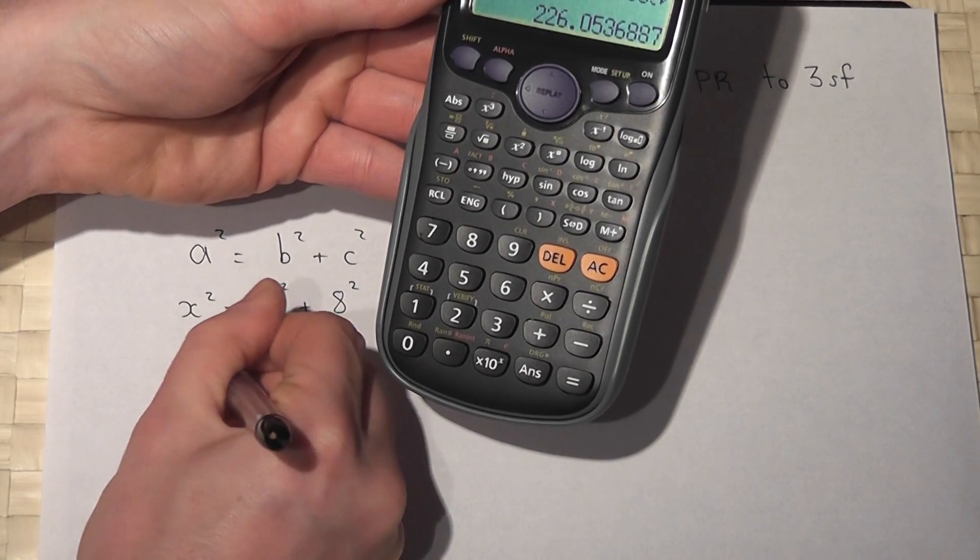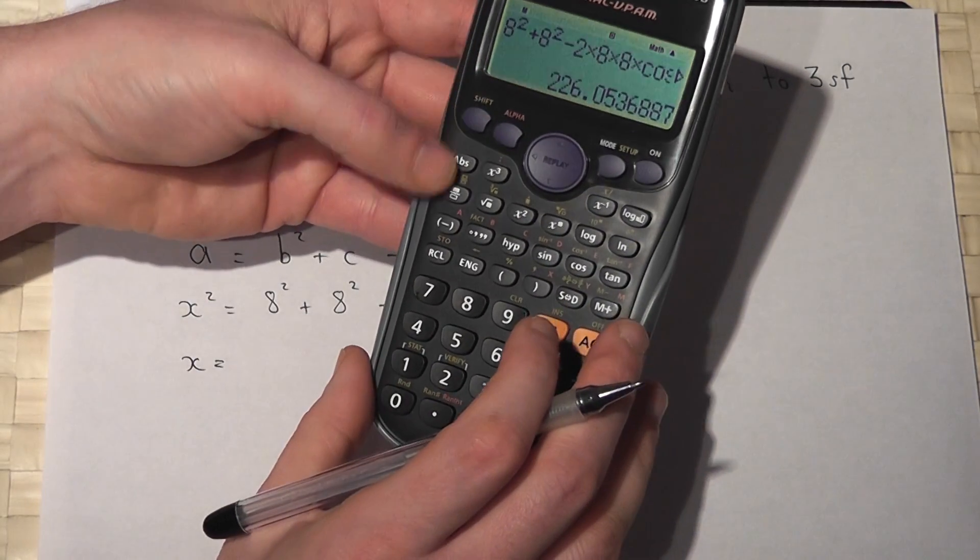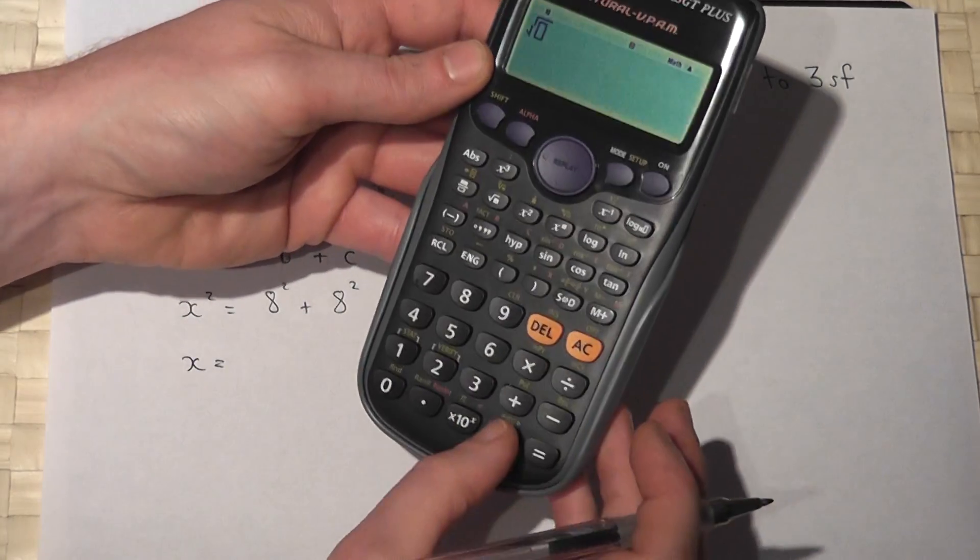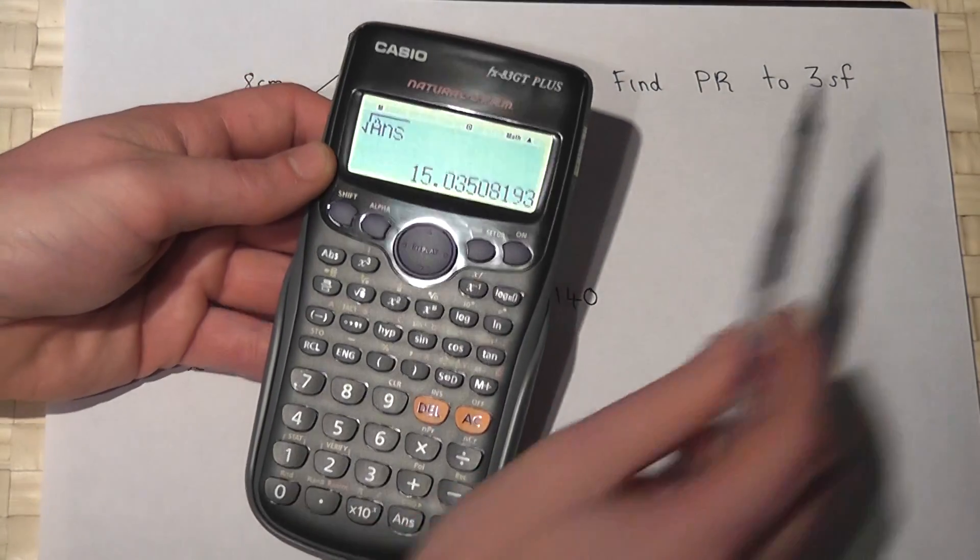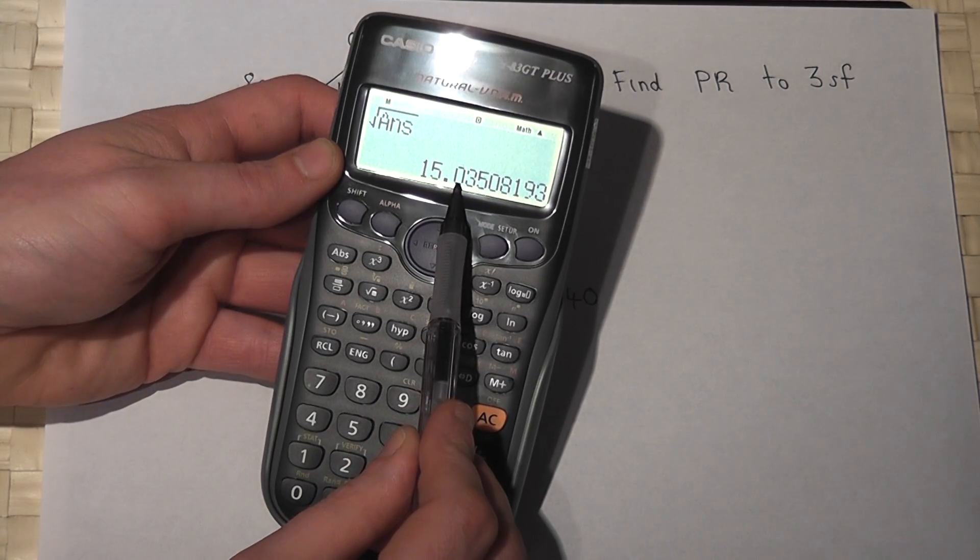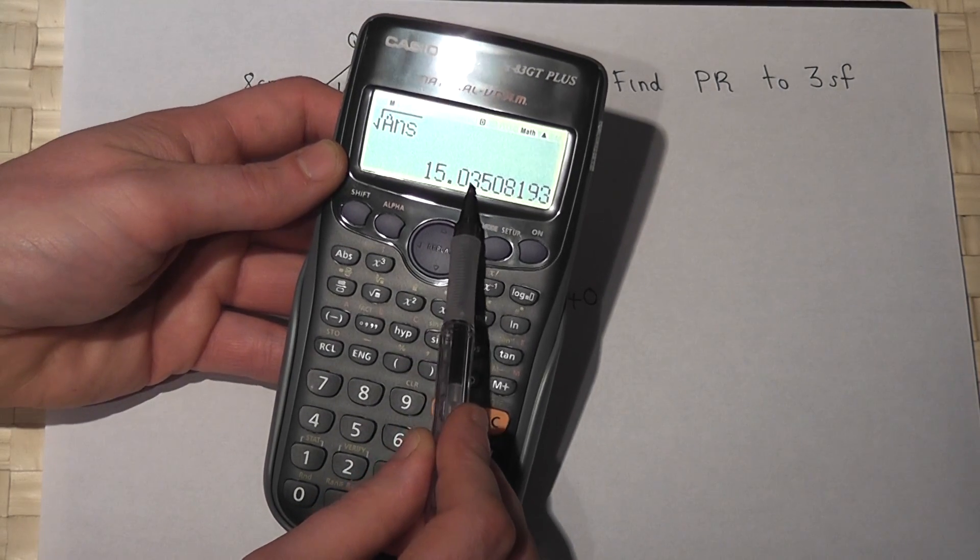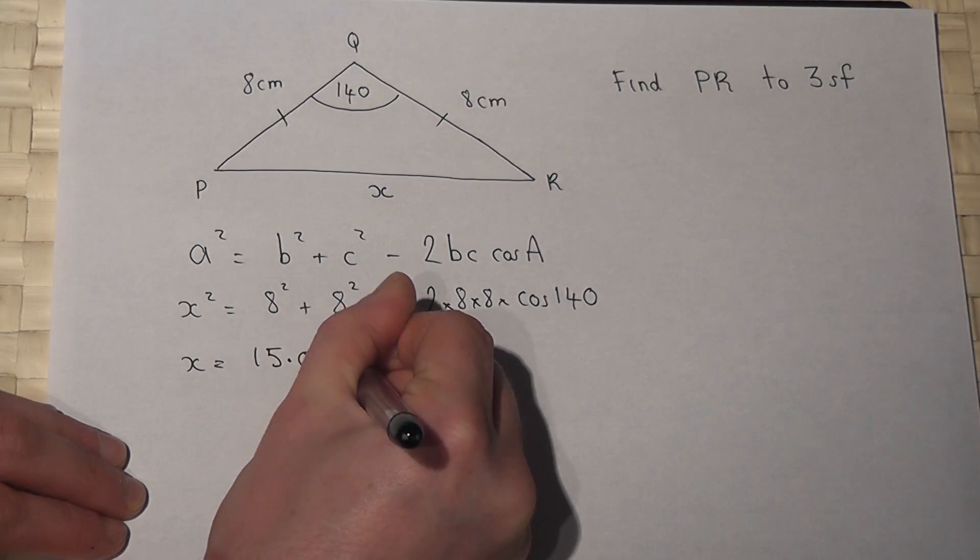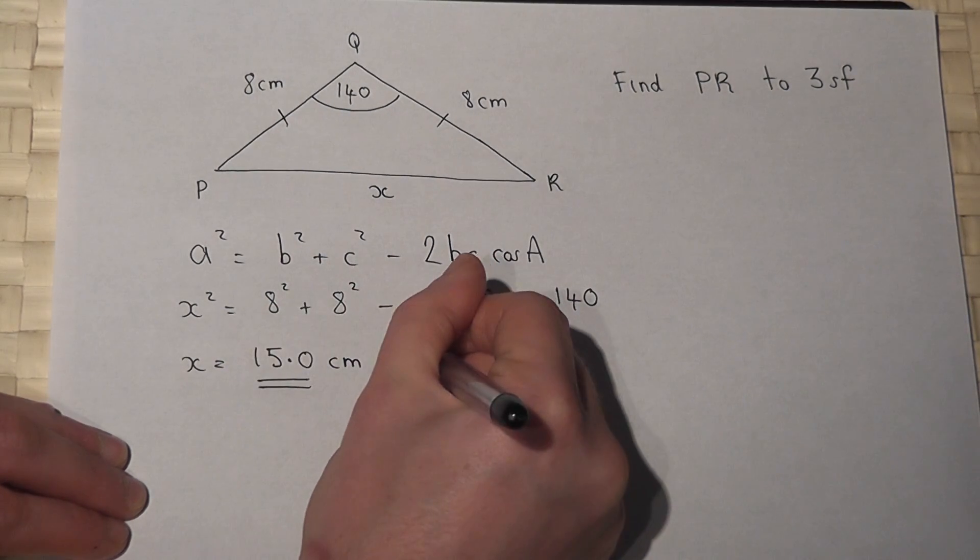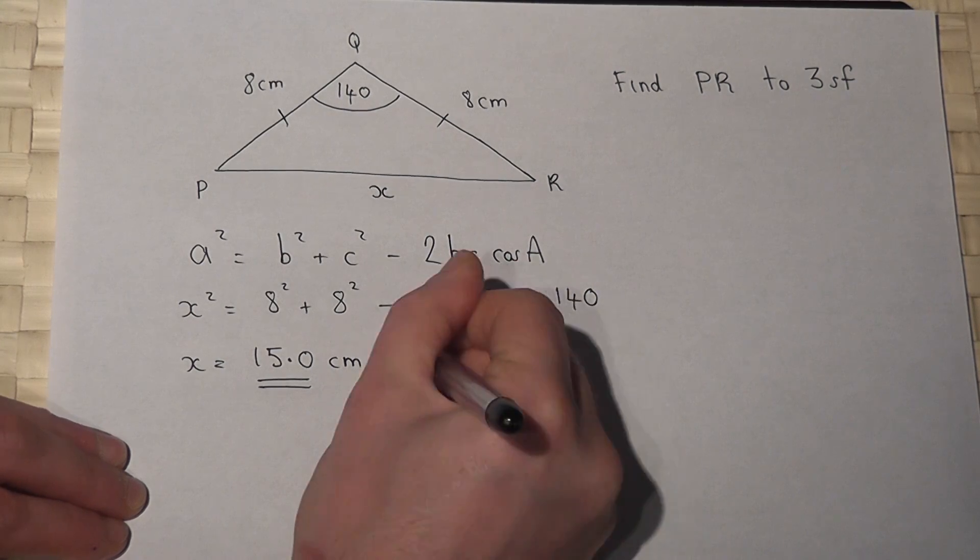So to find x I just find the square root of this answer. Press enter. I want 3sf, so one, two, three, after the zeros are three, so 15.0. So x equals 15.0 centimetres to 3sf.